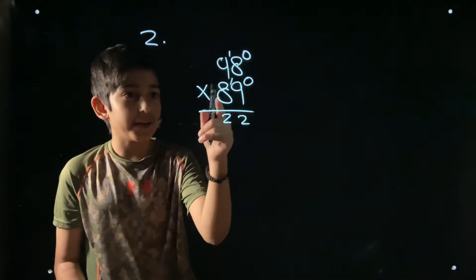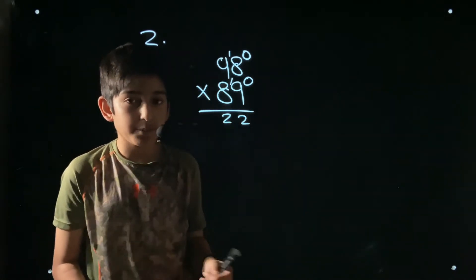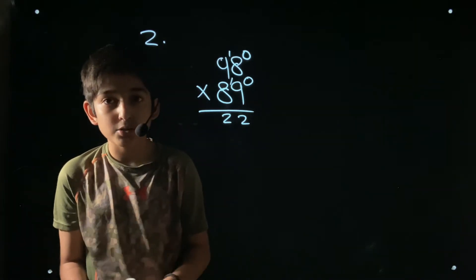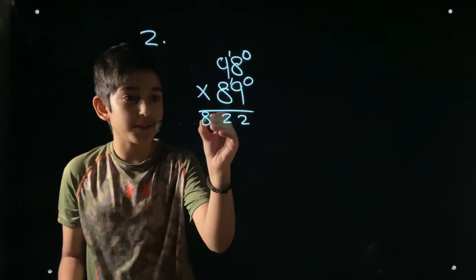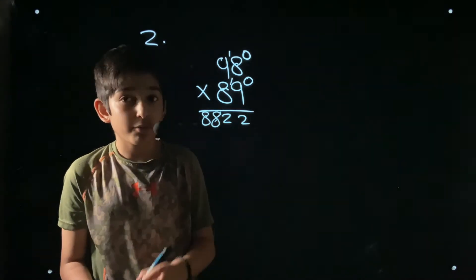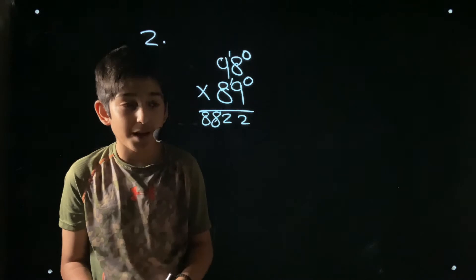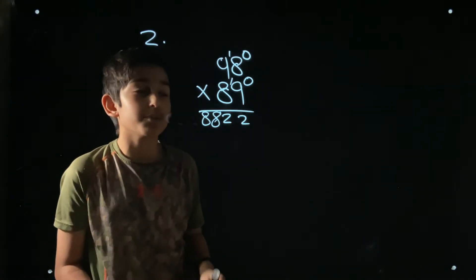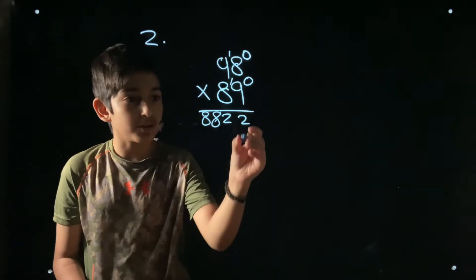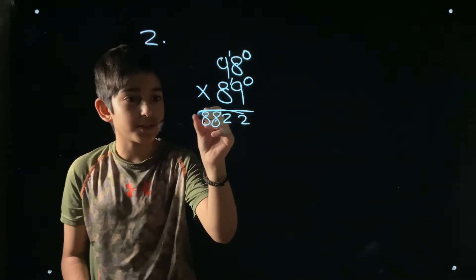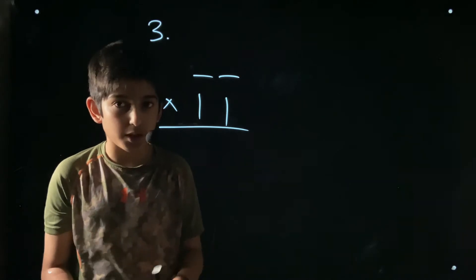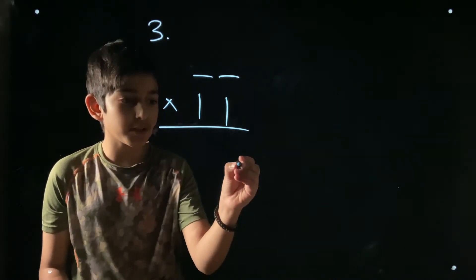Write 2 and carry 15. For position two: 8 times 9 is 72, plus the carry of 16 is 88. Remember, learn your math facts and you'll easily be able to do this in your head in under 10 seconds. So the answer to 98 times 89 is 8722.